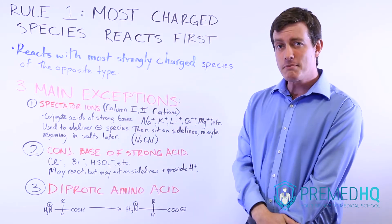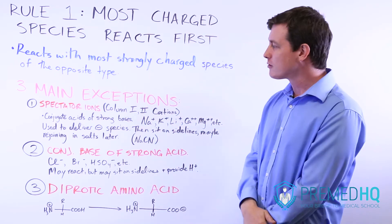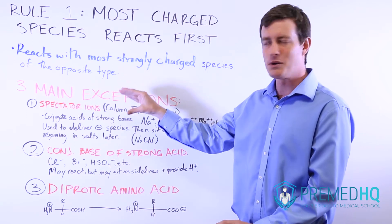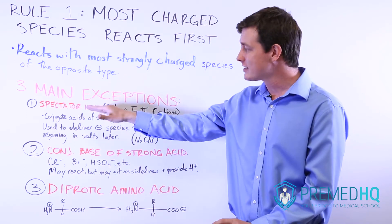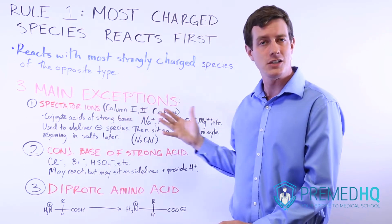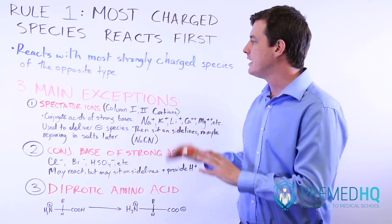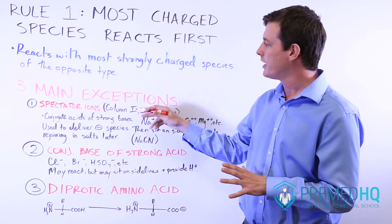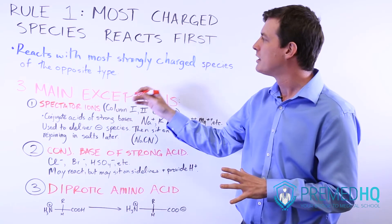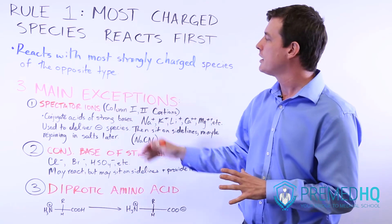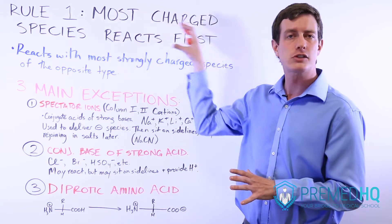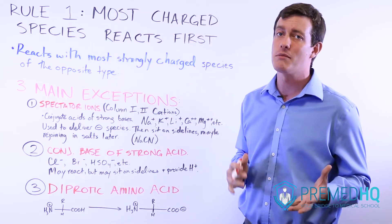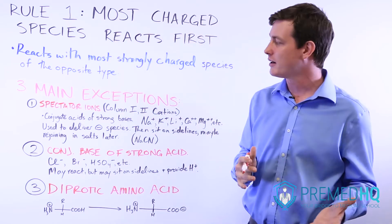On the MCAT there are only three main exceptions to this rule. Be aware of these exceptions because they do come up a lot, but if you have these three in mind and recognize them when they show up, you'll be able to apply this rule and solve the vast majority of organic chemistry questions you encounter.